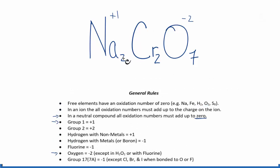So we could say 2 times plus 1, that's 2, plus we don't know the chromium here, and then we have 7 times the minus 2, that's minus 14. So all of this needs to equal zero.